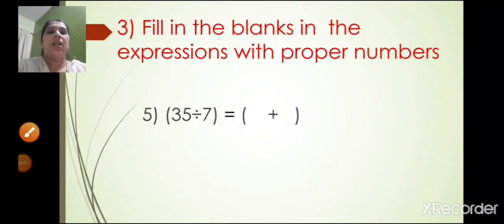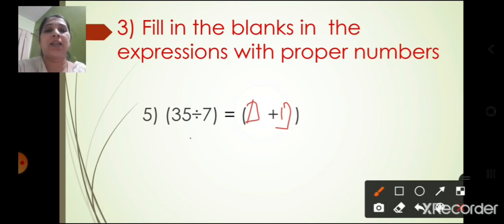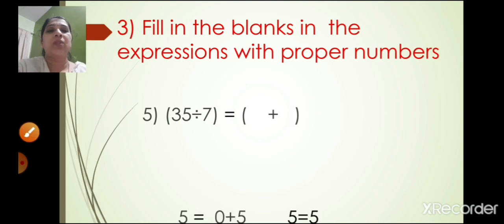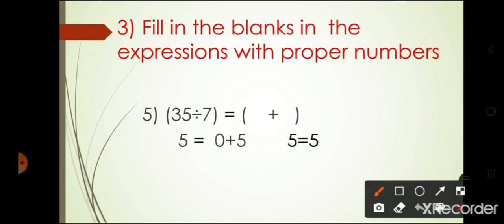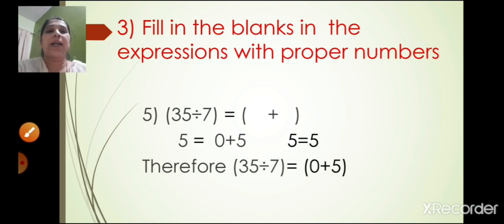The fifth one: 35 divided by 7 is equal to box plus box. Now 35 divided by 7 is 5 (seven fives are 35). To get 5 on the right side, you can write 0 plus 5, or 1 plus 4, or 3 plus 2 — any combination that sums to 5. Therefore 35 divided by 7 is equal to 0 plus 5.